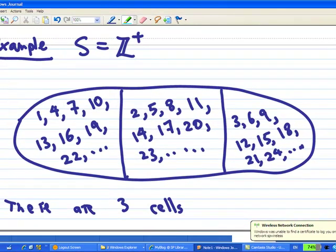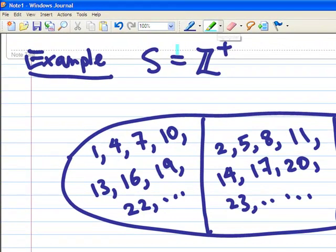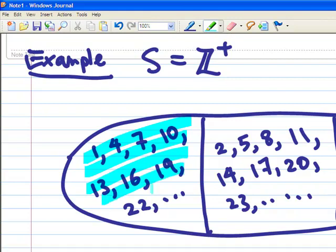Let's look at another example of a partition here. I partition the set of positive integers into three subsets now. The first one is 1, 4, 7, 10, 13, 16, 19, 22 and so on.